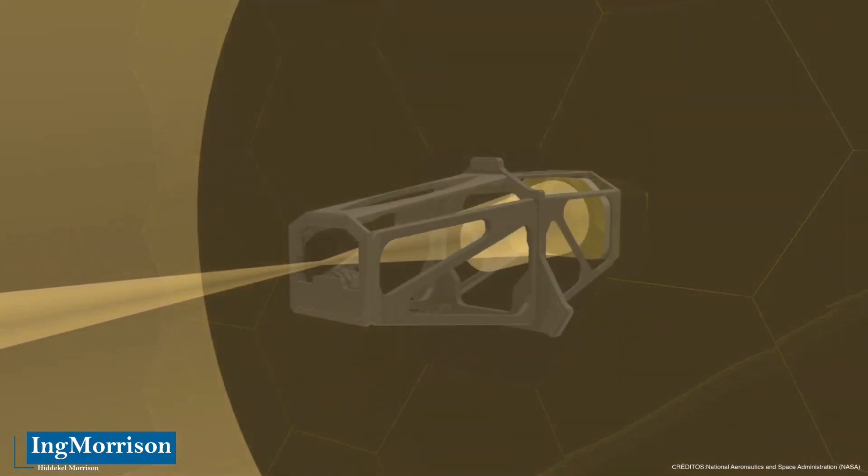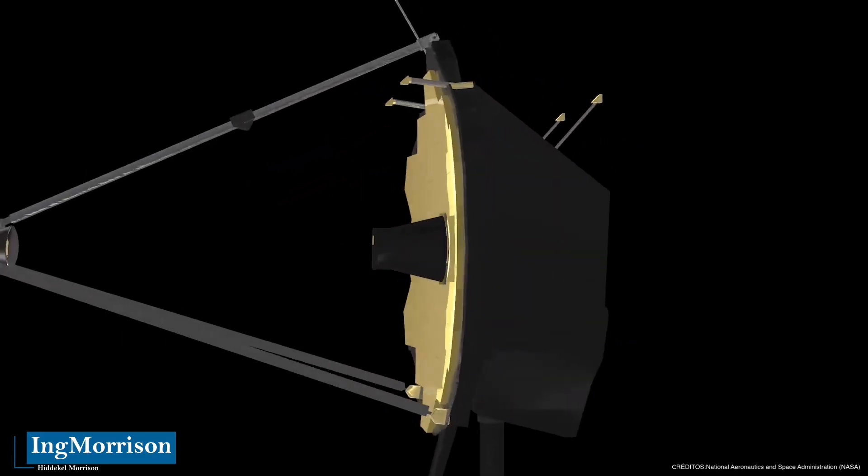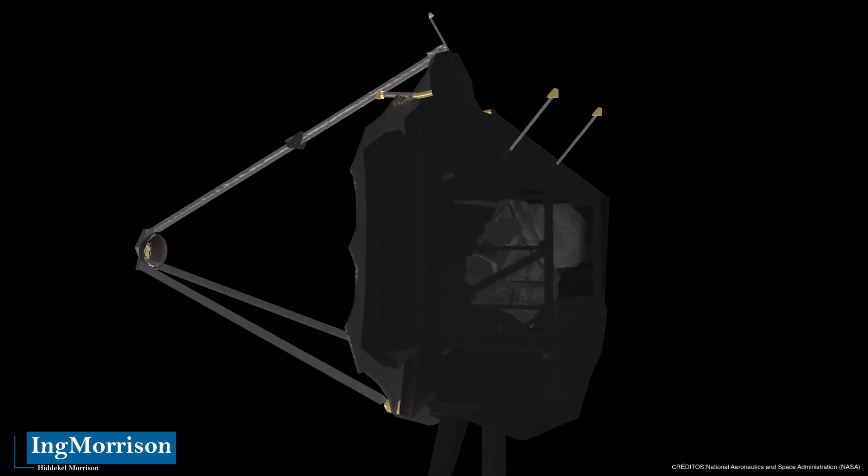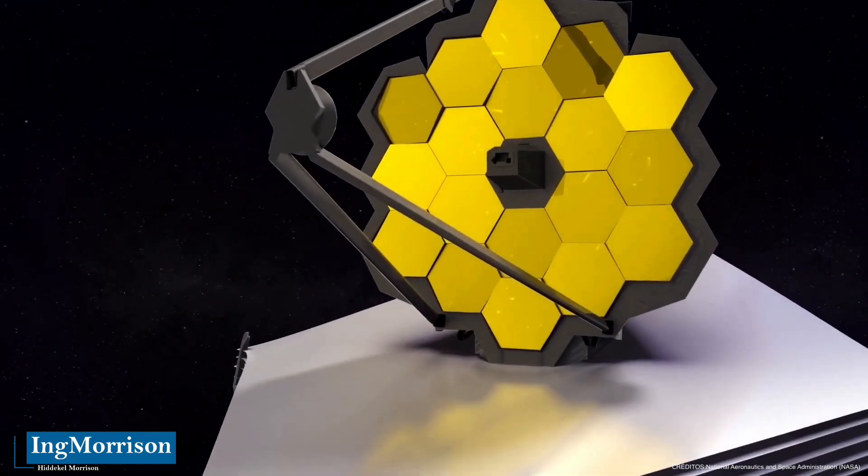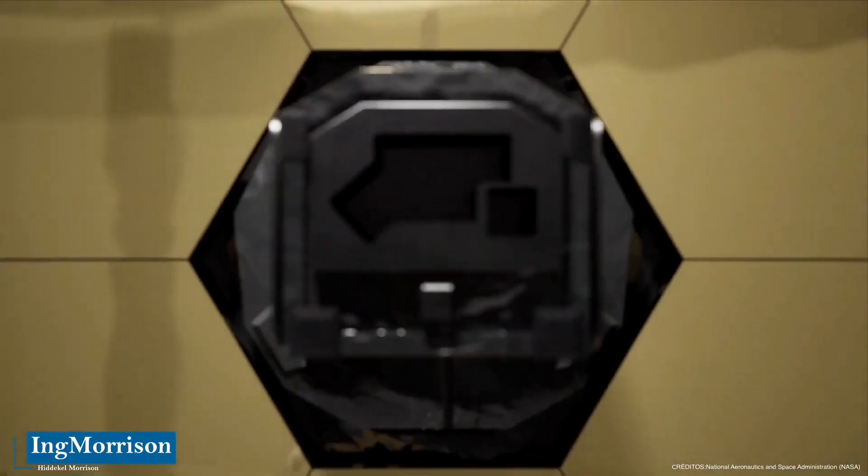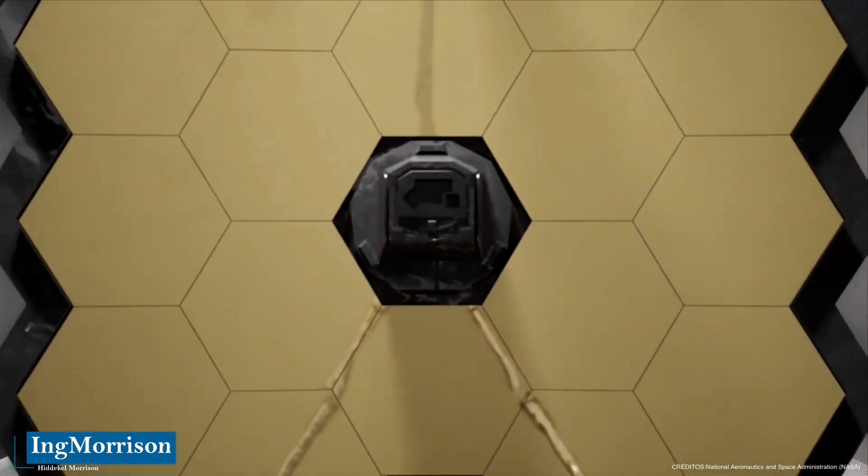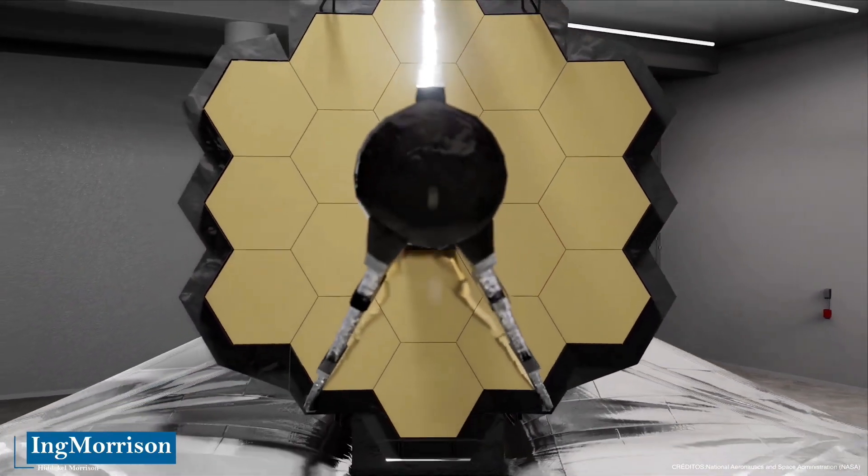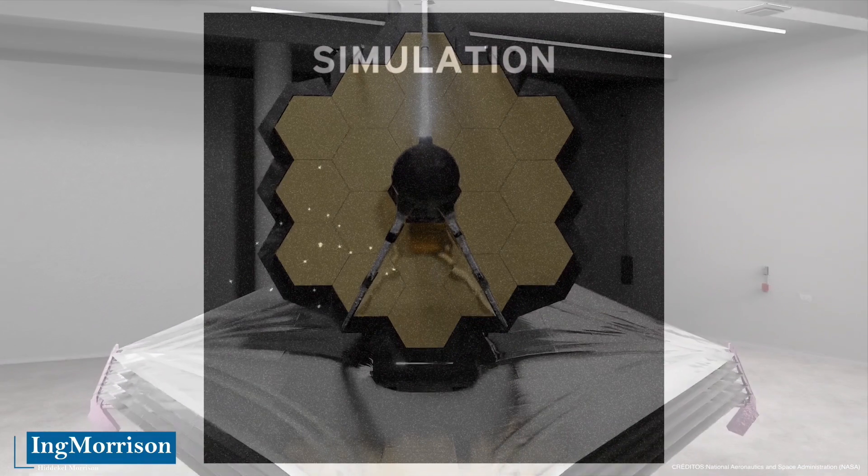The James Webb team began aligning the telescope this week and welcomed the first photons of starlight reflecting off its mirrors to be detected by the near-infrared camera, or NIRCAM. NASA has explained that initially the images will be out of focus, but the James Webb team will use them to gradually fine-tune the telescope. Although the process has only just begun, NASA revealed that the initial results matched the team's expectations and simulations.